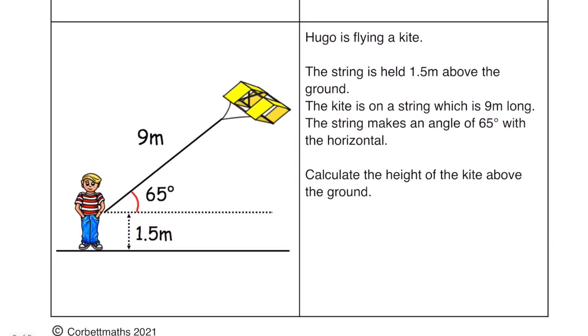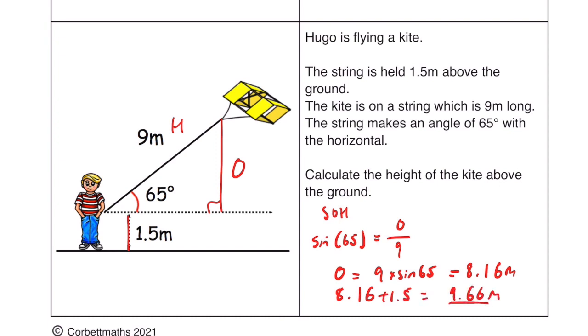Hugo is flying a kite. It looks like we're going to have trigonometry here. So if I complete the triangle we're trying to work out the opposite and we have the hypotenuse. So that's going to be SOH which will be sin of 65 equals opposite over 9. So the opposite is going to equal 9 multiplied by sin 65. If we pop that into a calculator we get 8.16 metres. And then because he is also at 1.5 metres off the ground by the time he's holding it it's going to be 8.16 add 1.5 which is 9.66 metres.